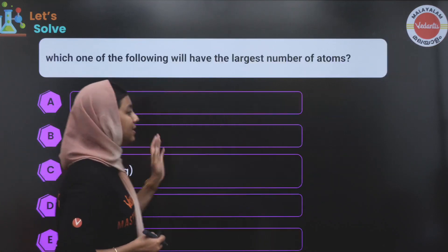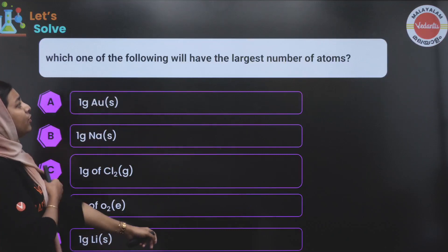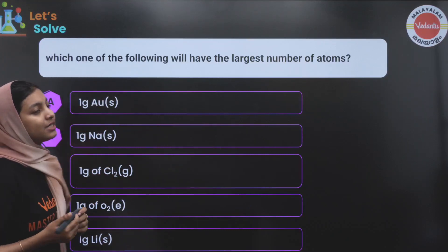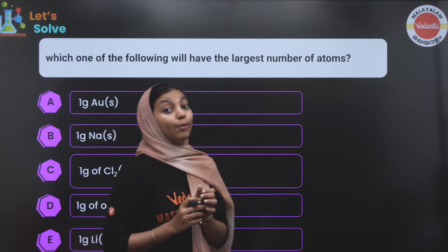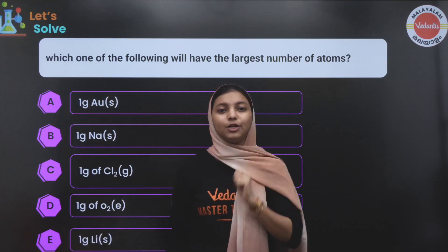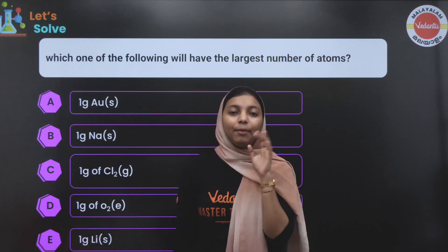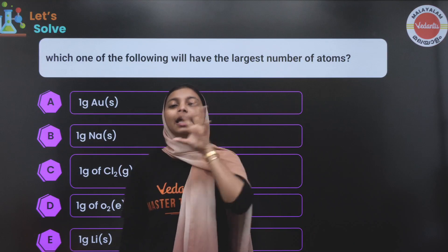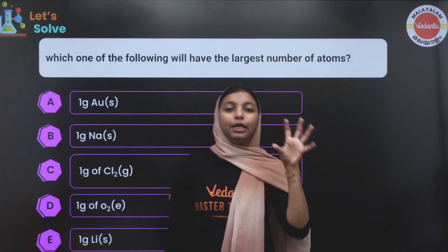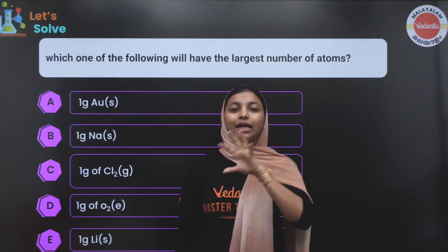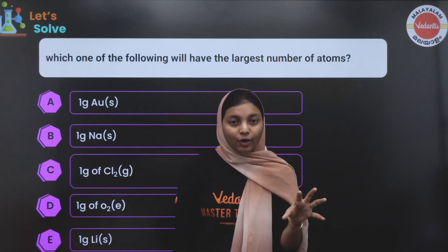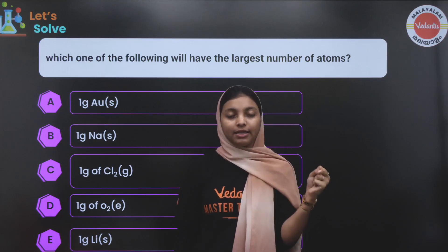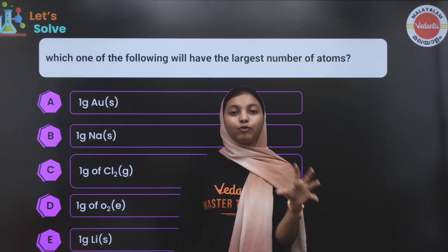Next question: Which one of the following will have the largest number of atoms? To find the number of atoms, we need to find the number of moles, then multiply by Avogadro's number. That gives the number of atoms — or, in the case of molecules, the number of molecules.